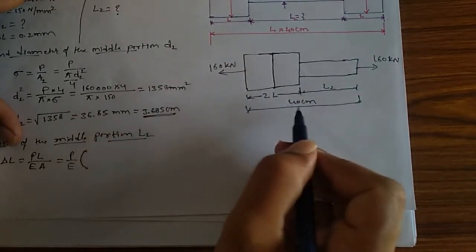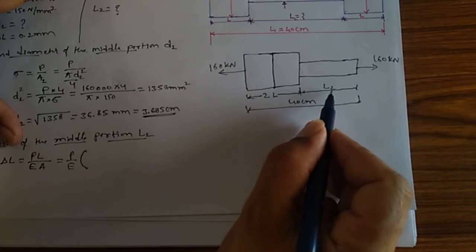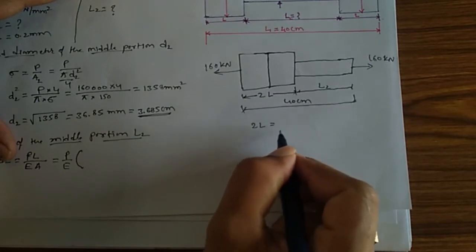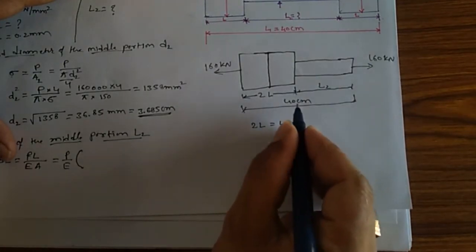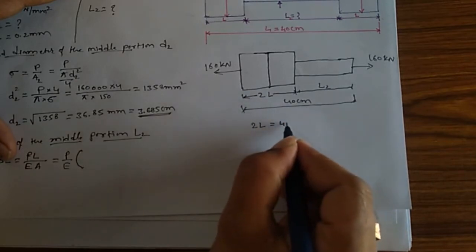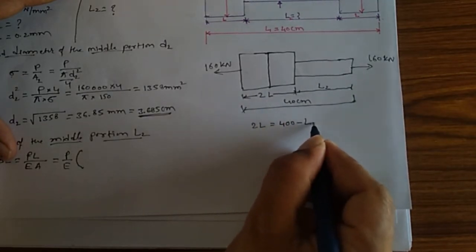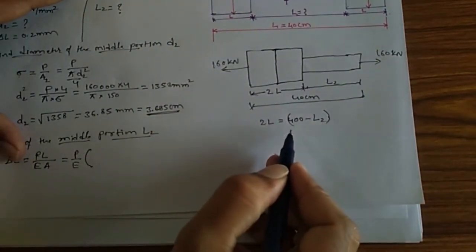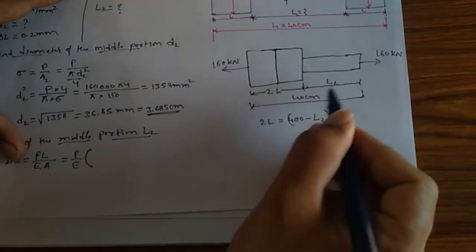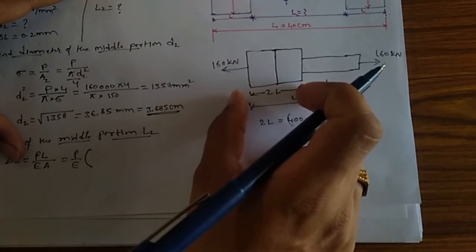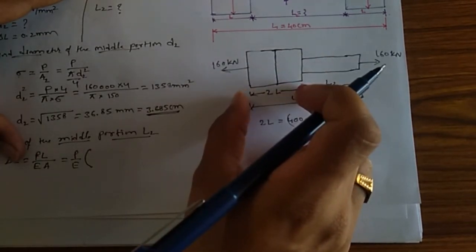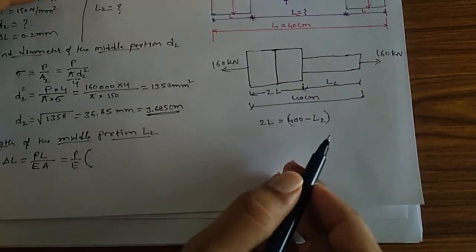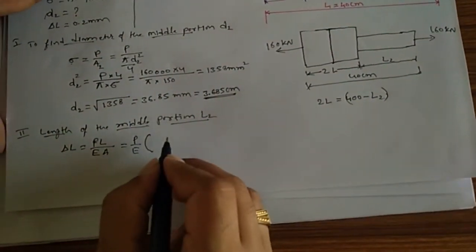I need to express 2L in terms of L2. The total length is 40 centimeters, so converting to mm that is 400 mm. So 2L equals 400 minus L2. Taking the total length minus the middle portion length gives the combined length of the two outer portions.